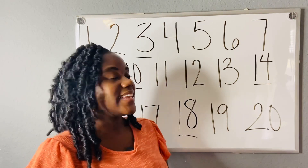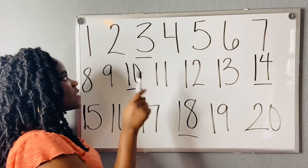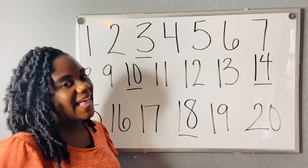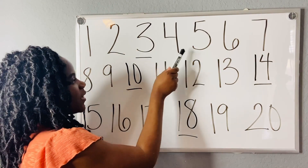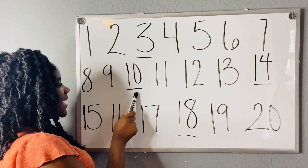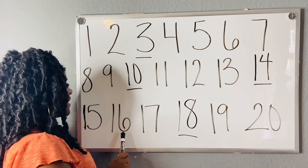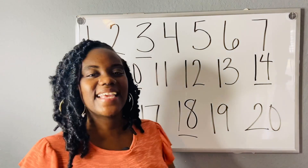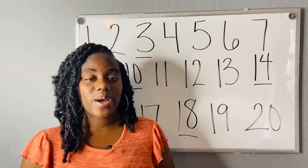So can you help me? Now that we have the missing numbers, can you help me count starting back at number 1 and stop at number 20? Let's go. 1, 2, 3, 4, 5, 6, 7, 8, 9, 10, 11, 12, 13, 14, 15, 16, 17, 18, 19, 20. Yay! So these are numbers 1 to 20.